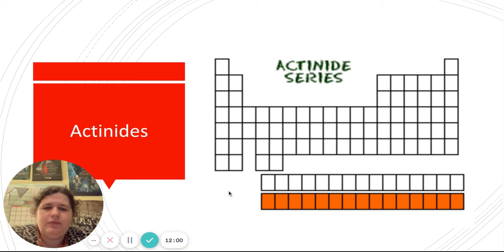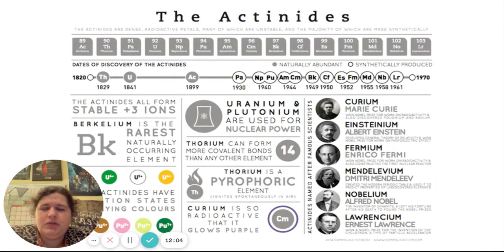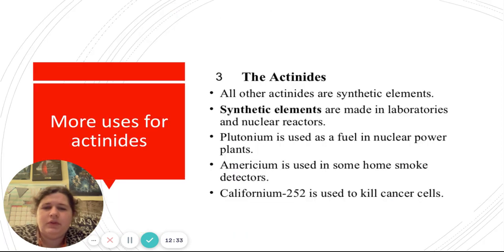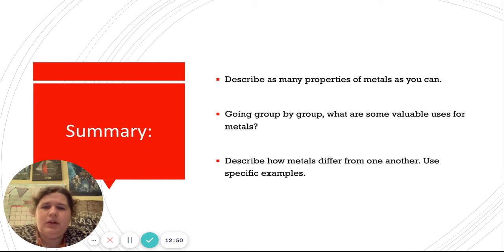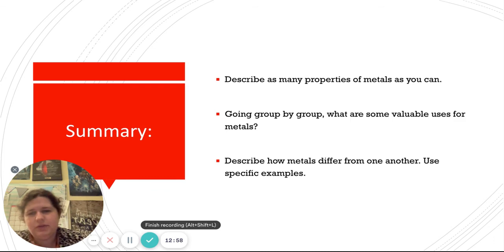The actinides are very radioactive for the most part. Usually when we talk about the actinides, we're talking about uranium or plutonium, which are used for nuclear fuel. Thorium can actually spontaneously combust in air — it'll just catch fire by itself. And curium is so radioactive that it glows purple. Some other uses: americium is used in smoke detectors, californium is used to kill cancer cells, and plutonium and uranium are used as fuel in nuclear reactions. And that is about it for the metals — go ahead and finish up the questions and make sure to turn in your Edpuzzle.